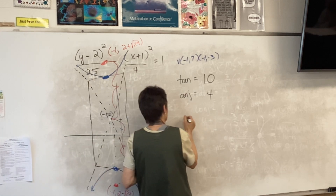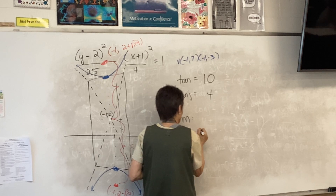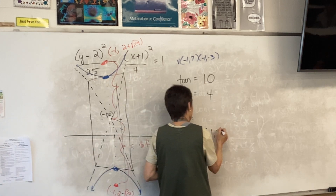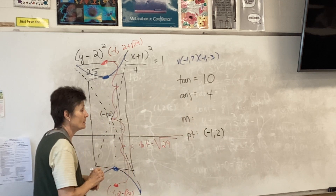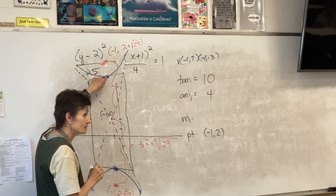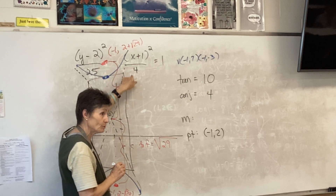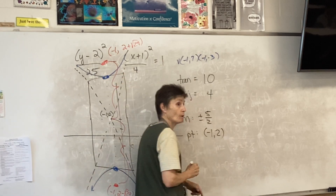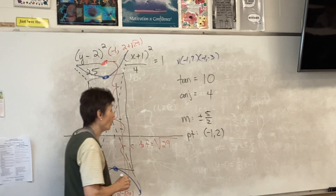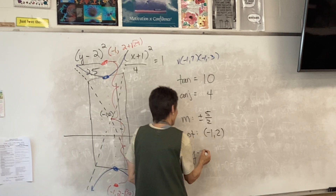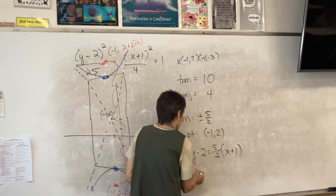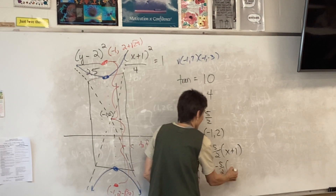Last thing — we need our asymptotes. What point am I going to use? Negative one, two — my center. Always my center. What's the slope this time? Five over two. So my slope is either positive five halves or negative five halves, depending on which asymptote.